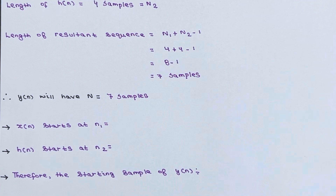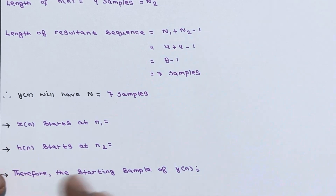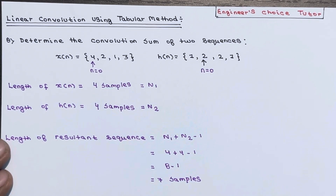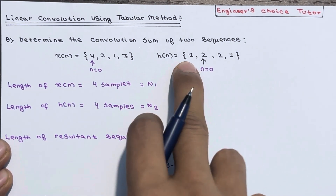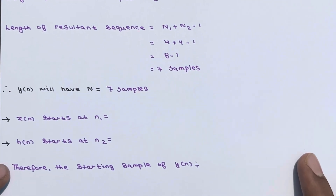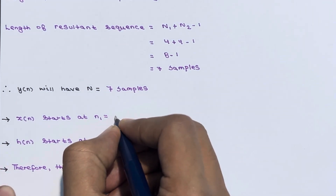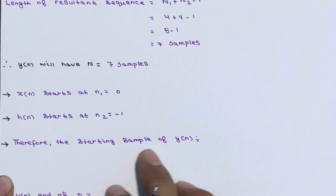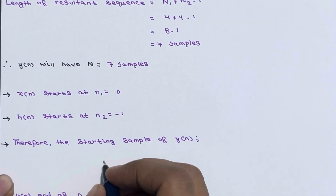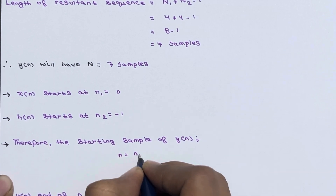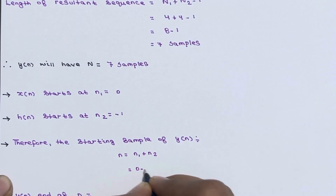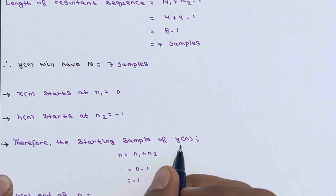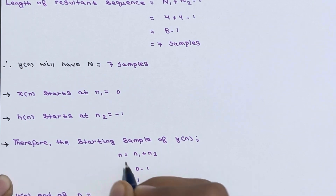Now let's calculate the starting and ending points. x[n] starts at n1=0 and h[n] starts at n2=-1. Therefore, the starting sample of y[n] is at n = n1+n2 = 0+(-1) = -1. So the starting sample of y[n] is at n=-1.